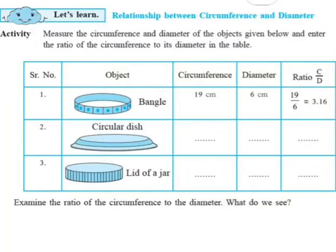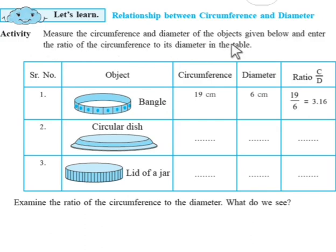Now children, we will see the relationship between circumference and diameter. On the same page, that is page number 75, an activity is given: measure the circumference and diameter of the objects given below and enter the ratio of the circumference to its diameter in the table.